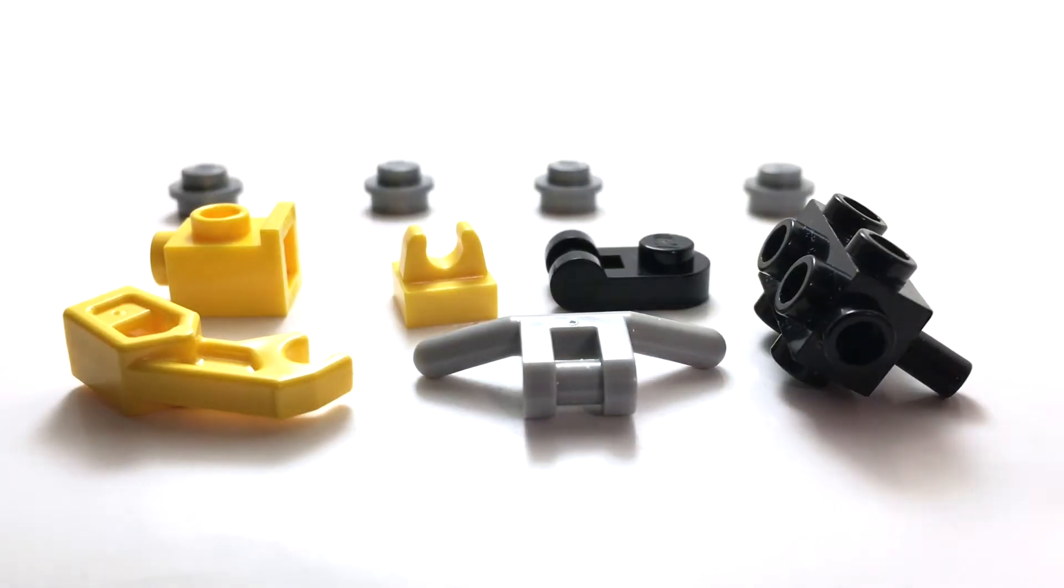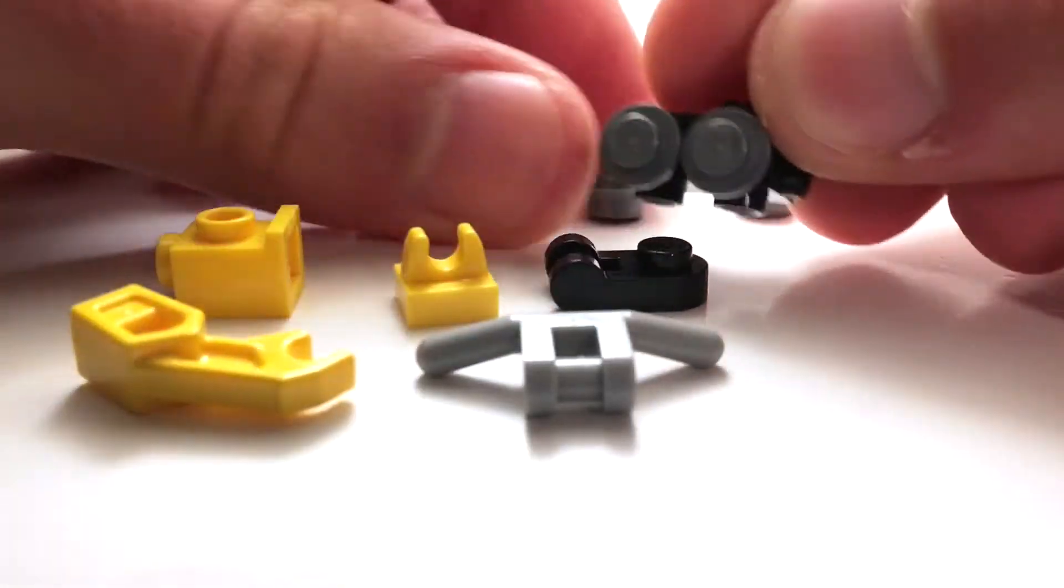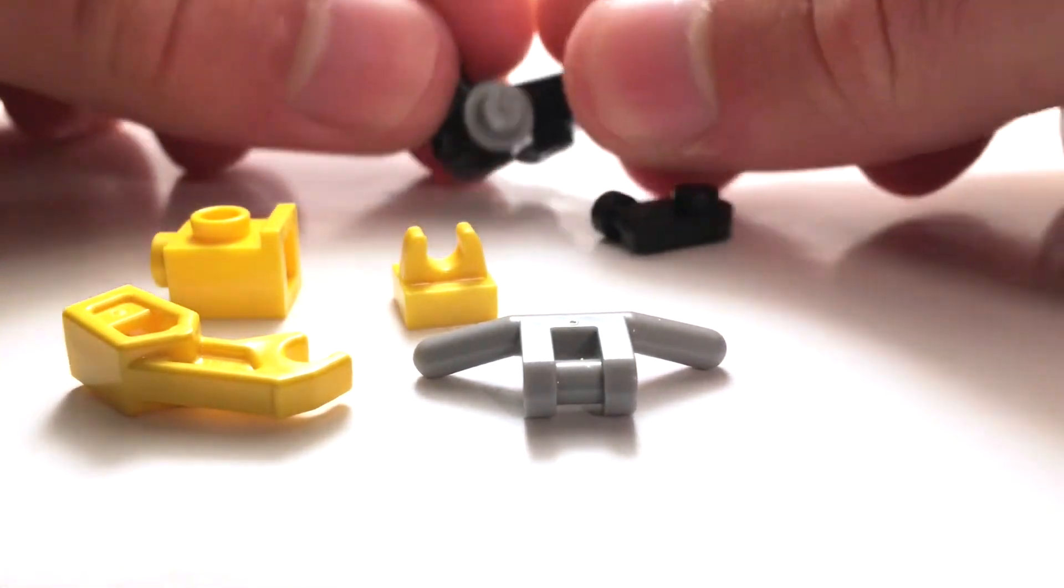Alright, so here we have our front loader. Building this up, we have these four one by ones that attach around this minifigure blaster piece as the wheels.